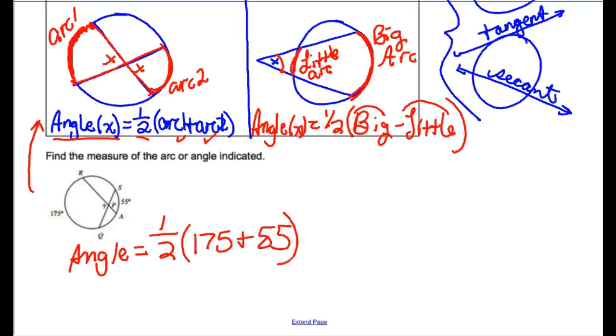When I do 175 plus 55, I get a nice 230. So it's going to be one half of 230, which is 115 degrees. So right here at angle question mark, 115. This one's 115.